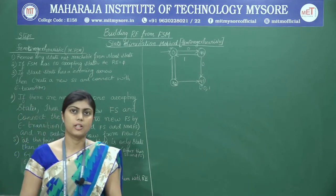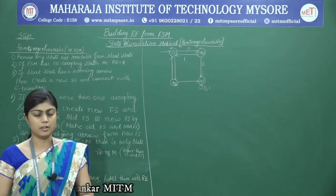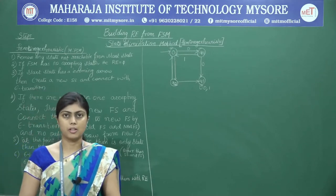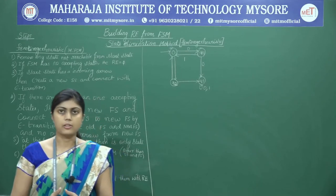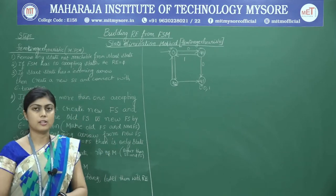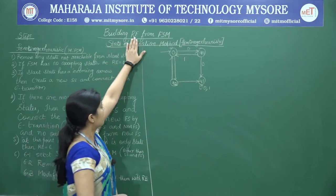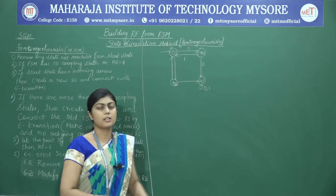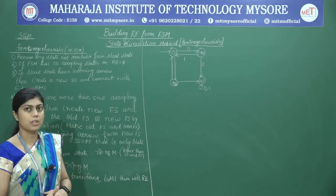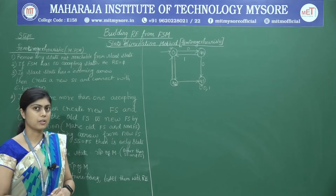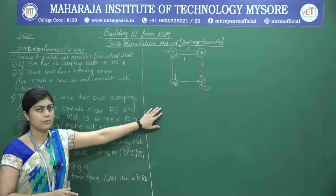Hello everyone. In the previous class we learnt how to convert regular expressions into an automata — we built an epsilon NFA with the help of regular expressions. In today's class we are going to learn how to build a regular expression from a given finite state machine. The regular expression should match the set of strings accepted by the DFA.